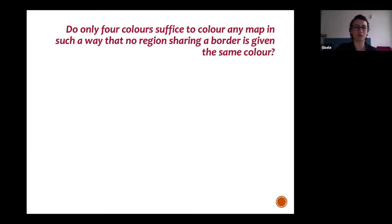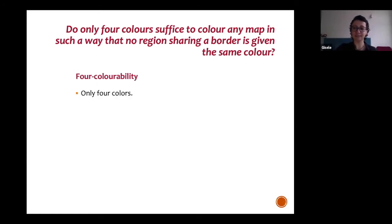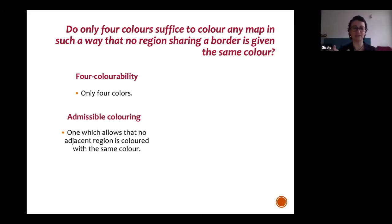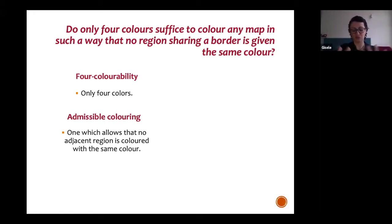The problem is a very simple one — even a child can understand it. Do only four colors suffice to color any map in such a way that no region sharing a border is colored with the same color? The problem articulates two demands: the demand for colorability, and the demand for admissible coloring — the idea that you cannot have regions sharing the same color. This is intuitive, because if you want to differentiate regions in a map, of course they cannot have the same color.